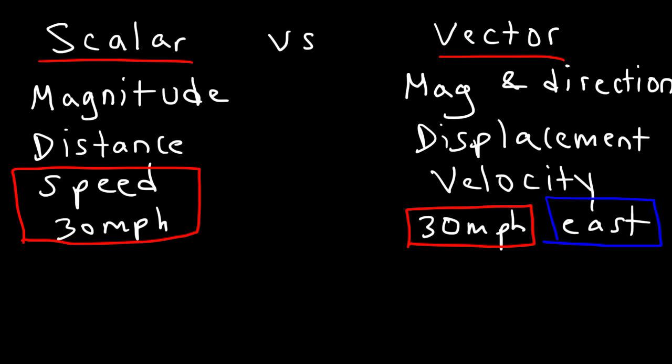So here's another example, force. Is force a vector quantity, or is it a scalar quantity? You can apply 50 newtons of force, east, west, north, or south. So force has direction. You can push an object, you can push a box to the right, you can lift it up, you can push it towards the north direction. So force is a vector quantity.